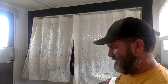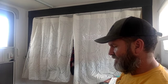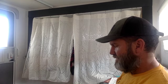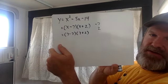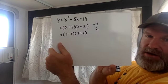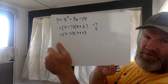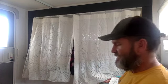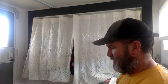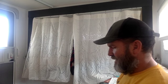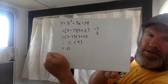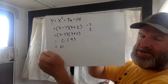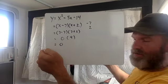So we could put in a 7 for x. We'd have 7 minus 7 and 7 plus 2. So if I substitute in a 7 for x, I get 7 minus 7 in the first parentheses and 7 plus 2 in the second. So I end up with 0 times 9. And anything times 0 is 0.